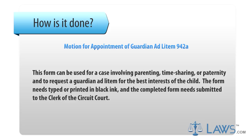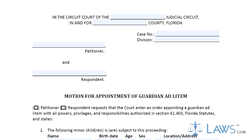Step 1. After filling out the heading of the document, the petitioner or the respondent must check the appropriate box asking the court to appoint a guardian ad litem. Part 1 requires the petitioner or respondent to list the names, birth dates, ages, sex, and addresses of all the children involved.